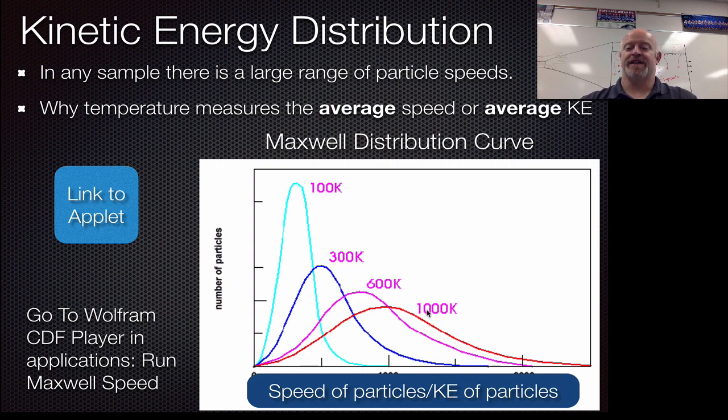So the take home here is that for any given sample we don't have a single speed of particles - we actually have a range of speeds. And that's going to lead into some different things in terms of how things boil and why they boil where they do and vapor pressures and other things that we're going to be talking about in some future lessons.